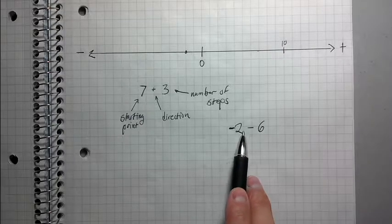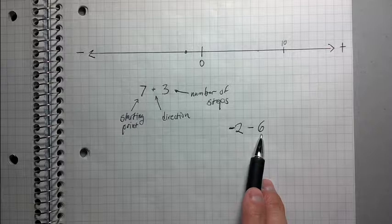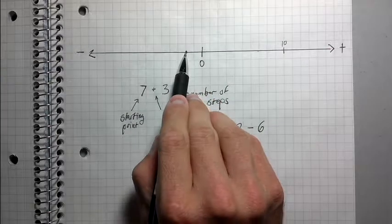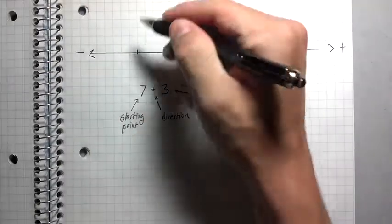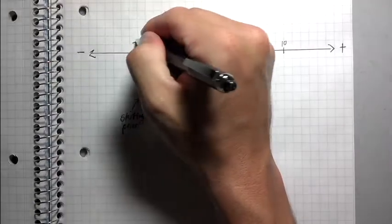So we're starting at negative 2. We're going to go to the left for 6 steps. So starting at negative 2, go to the left for 1, 2, 3, 4, 5, 6 steps. Now, notice this is negative 8.